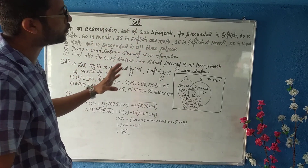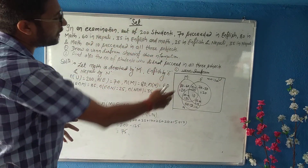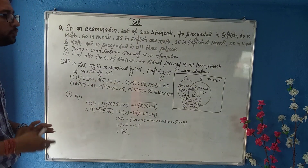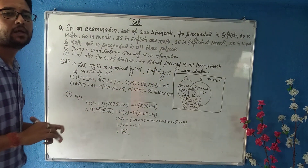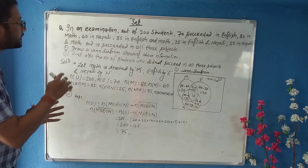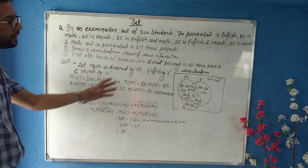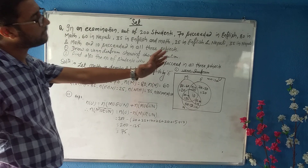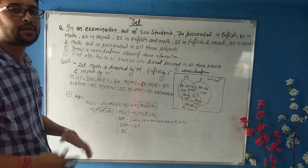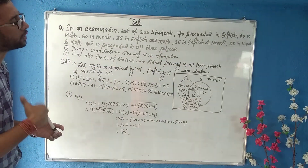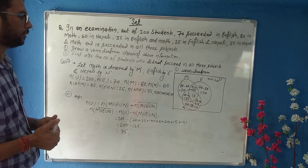First we should represent these things in the Venn diagram. Using a ruler, represent the learning process. Next, find the number of students who did not succeed in all three subjects.